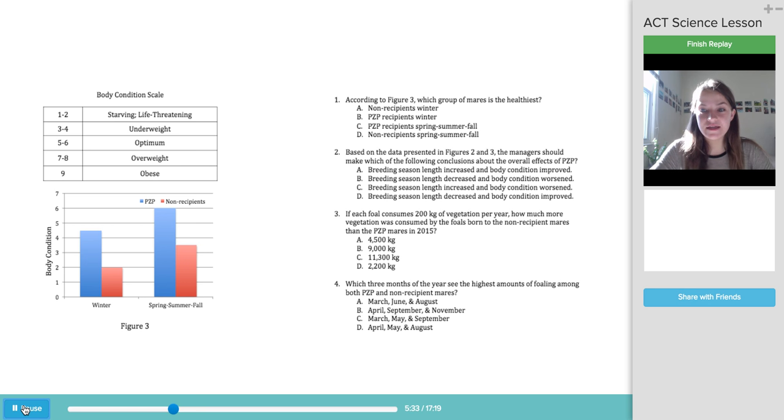So now that we've got an idea of all the figures and the background of this section, we can approach questions and hopefully they won't be as confusing as they would have if we jumped straight to the questions. So number one, according to figure three, which group of mares is the healthiest? What's very typical in the science section is a lot of the questions will address certain figures, which is really helpful because if you skim the text and then approach the questions, you can jump and see exactly where you need to look. So here, figure three, had we not just looked at figure three, we can now look at figure three, review it, and we're now saying which group is the healthiest. So based on the body condition scale, healthy is definitely around five to six.